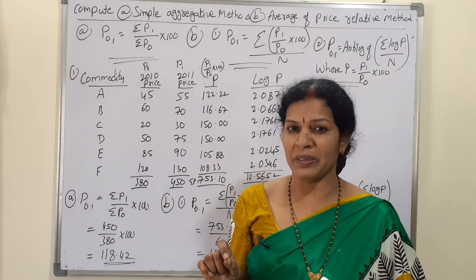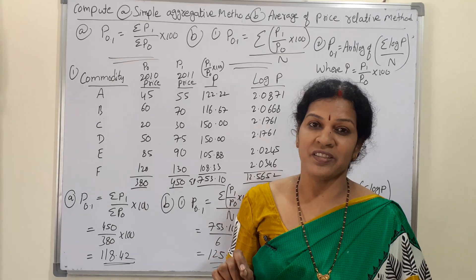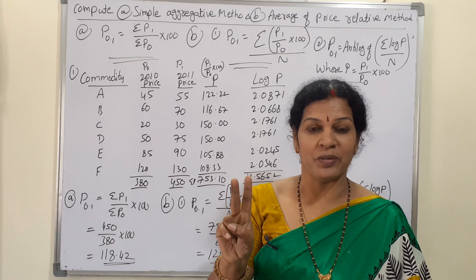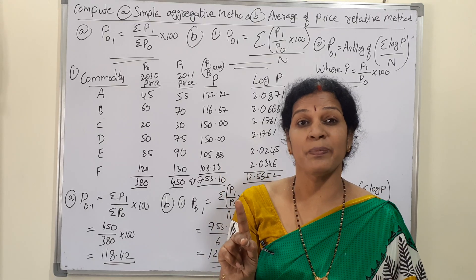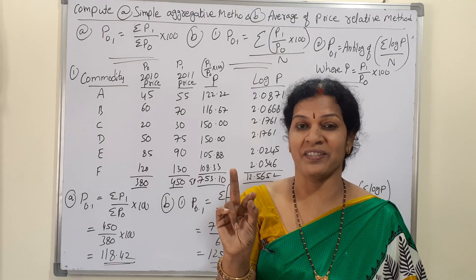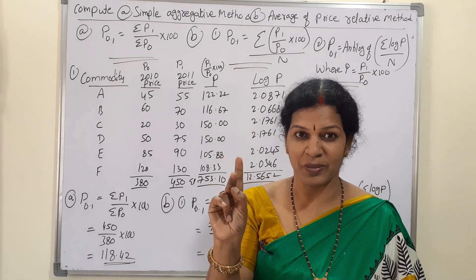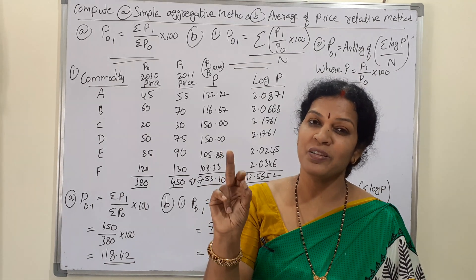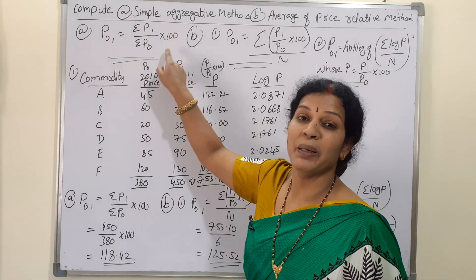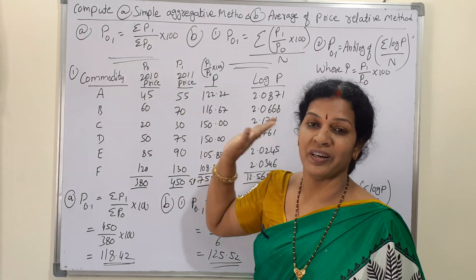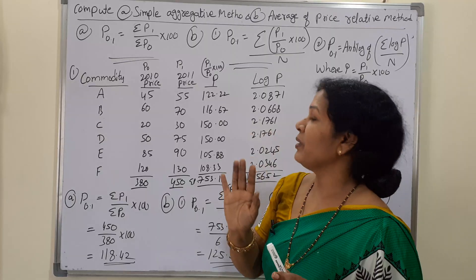In the formula, P means price. P₀ is the base year price and P₁ is the current year price. So the formula is: P₀.₁ = (ΣP₁ / ΣP₀) × 100. This is the simple aggregative method formula.